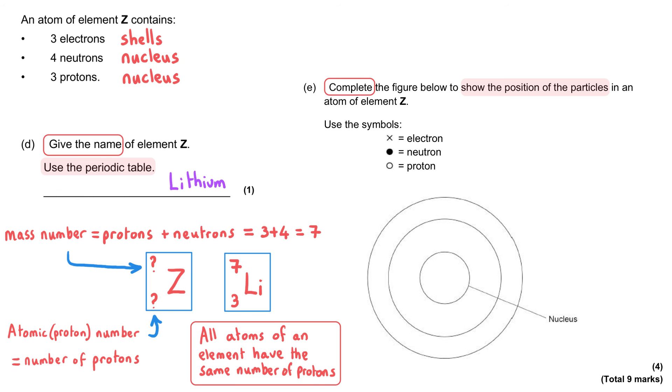We need to put the protons and the neutrons into there. We've been told to put the neutrons in as filled in circles. And so we need to put four filled in circles into the nucleus at the center of this atom. And that gets us our first mark of the four.